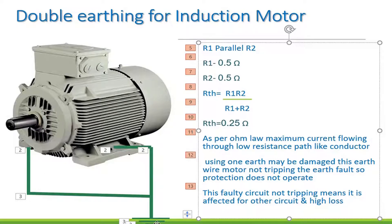Some electrical operators use relays for sensing the earth fault current. If single earthing is used, the earth fault relay may not sense the fault current properly. Then the relay may not trip in time. Maximum fault current can flow, disturbing and damaging other equipment connected to the same circuit. The main result is total and high equipment loss.